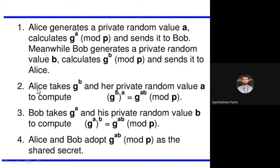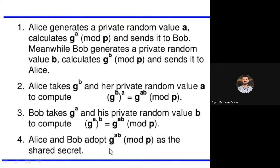With respect to Alice, Bob should calculate the similar part. Both parts are one and the same — this will be the shared secret of both Alice and Bob. Whatever you calculate in the second and third steps should be equal. Alice and Bob adopt G to the power of AB mod P as the shared secret. Whatever you get from this computation is your shared secret.